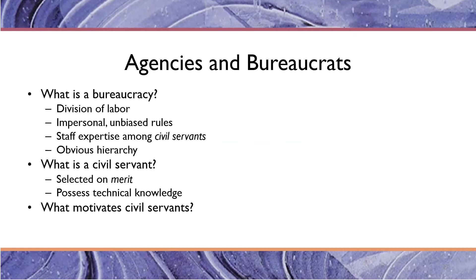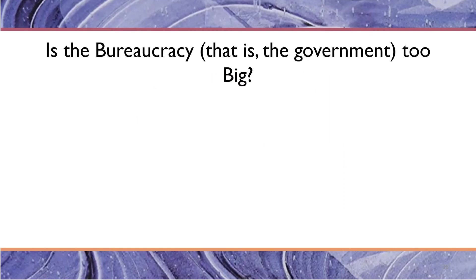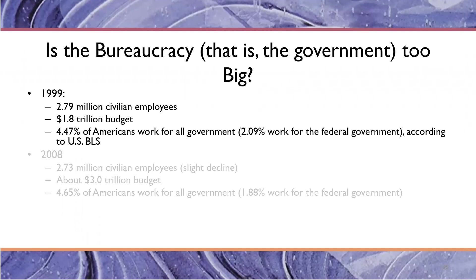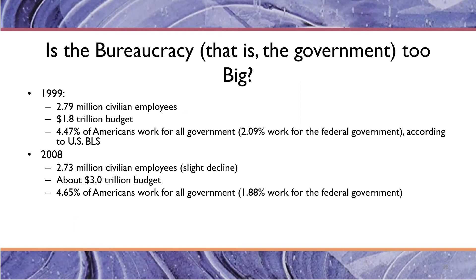One of the arguments about the bureaucracy in the United States is that government is just too big. In 1999 there were 2.79 million civilian employees and a $1.8 trillion budget, and about four and a half percent of all Americans worked for the government, about two percent for the federal government. By 2008, it had grown to a budget of over $3 trillion with slightly fewer civilian employees at the federal level. So there are a lot of people working in the United States government — and these are civilian, non-military, not counting soldiers, sailors, Marines, and airmen. The number of employees has somewhat shrunk but there's more money being spent.